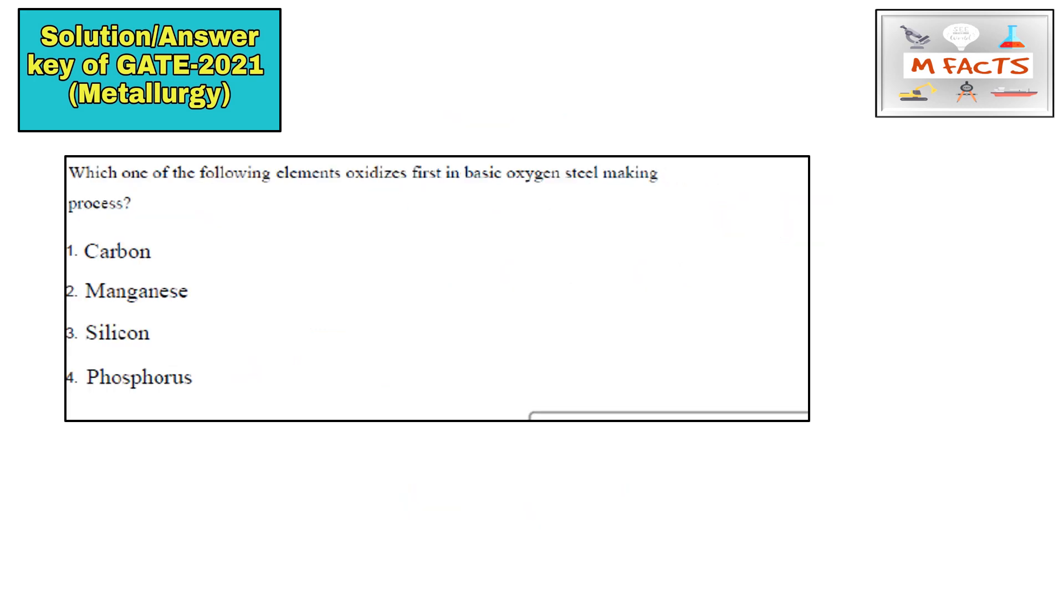The next question is which one of the following element oxidizes first in basic oxygen steel making? This is BOF steel making, basically they are talking about LD steel making. So in BOF steel making, first metal that oxidizes is silicon. So this C part is correct here for this question.